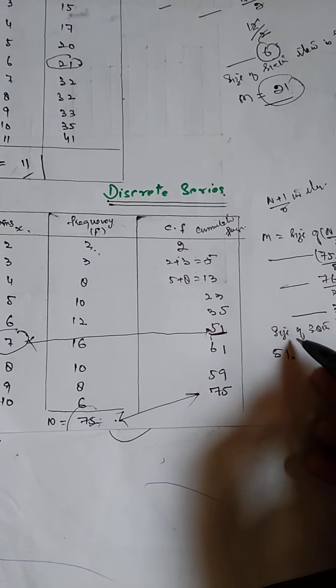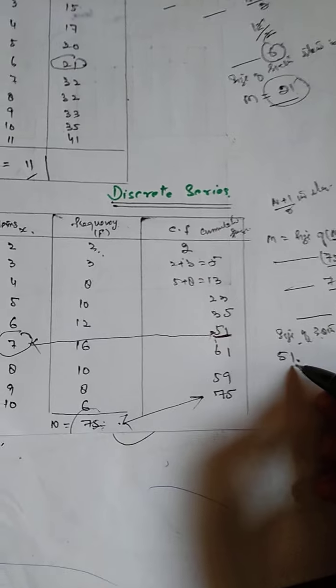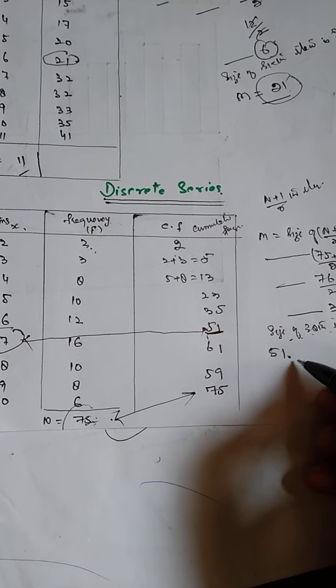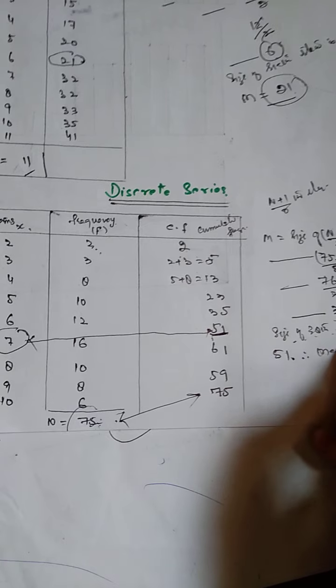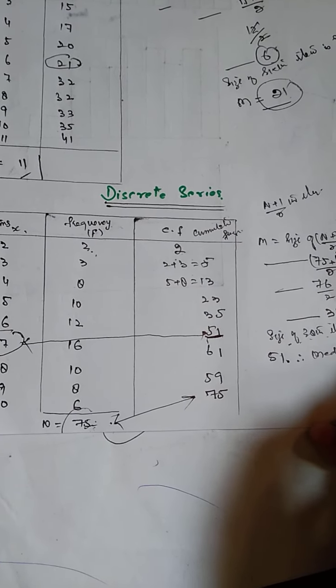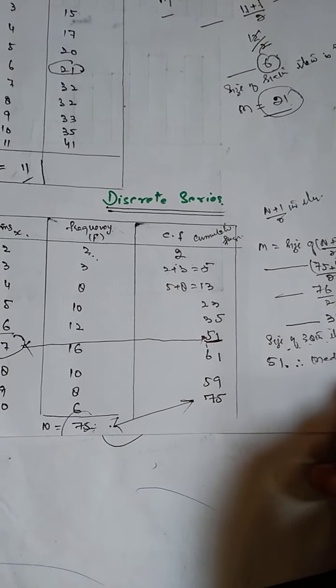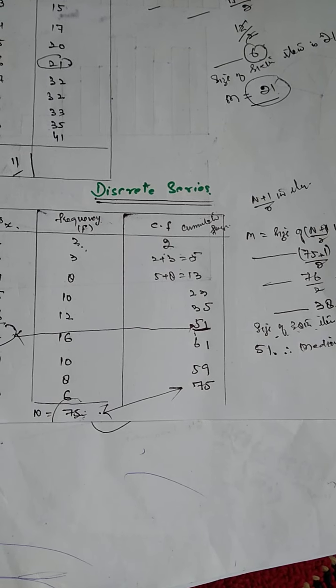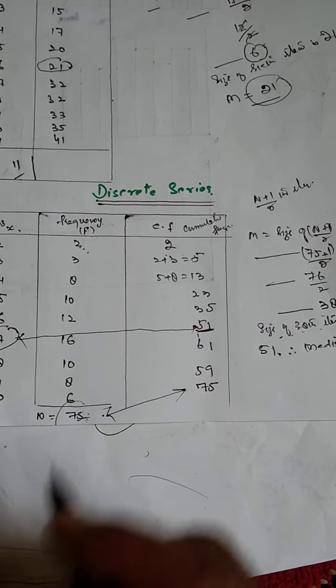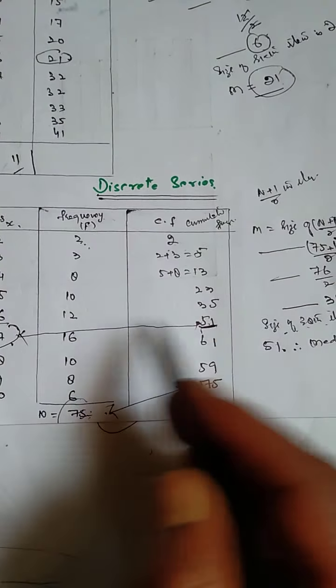Size of 38th item lies in CF 51. Therefore, median is equal to 7, because it is the value corresponding to 51st cumulative frequency, which is 7 here, which is the corresponding value in the X.